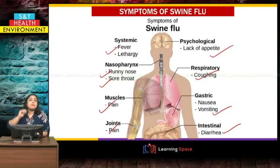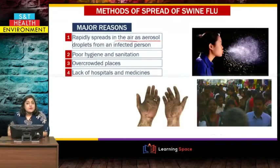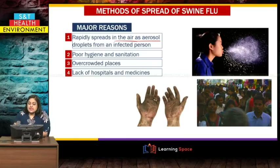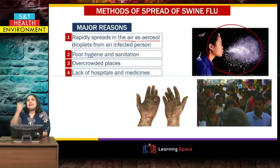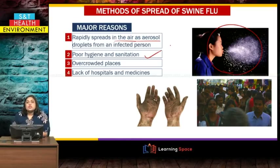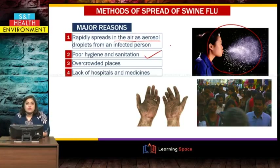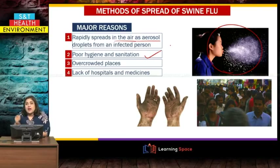Swine flu can spread from one person to another very fast. The major reason is aerosol particles — when an infected person sneezes, it releases a lot of droplets called aerosols into the air, and if inhaled by a healthy person, these can lead to swine flu. Other reasons include poor hygiene and sanitation, and overcrowded places where there is a great chance that someone is infected and releasing a lot of virus into the surroundings.